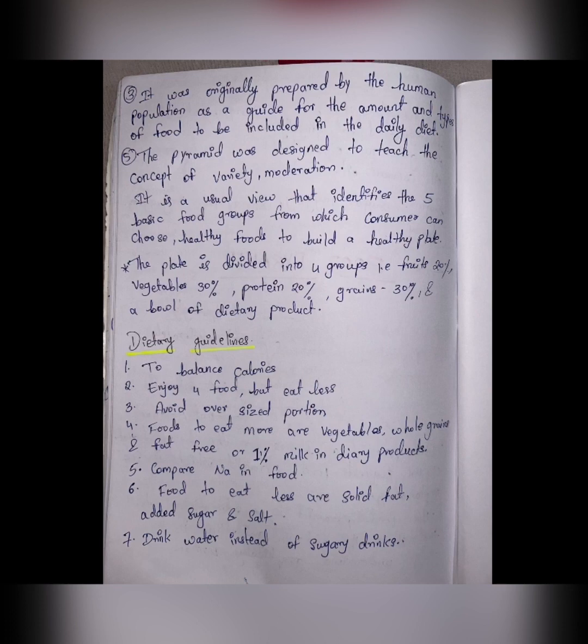The plate is divided into four groups: fruits 20%, vegetables 30%, protein 20%, grains 30%, and a bowl of dairy product. Dietary guidelines: to balance calories, enjoy food but eat less and don't overeat. When having different types of foods, take them in small quantities — all food in required quantities. Avoid oversized portions.